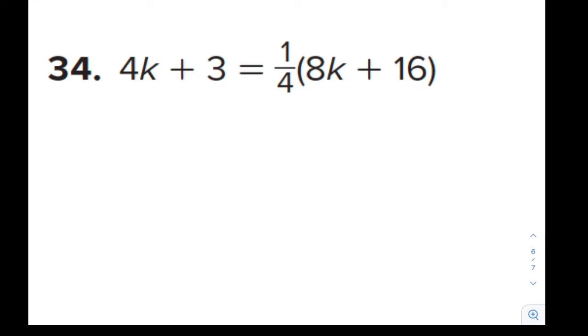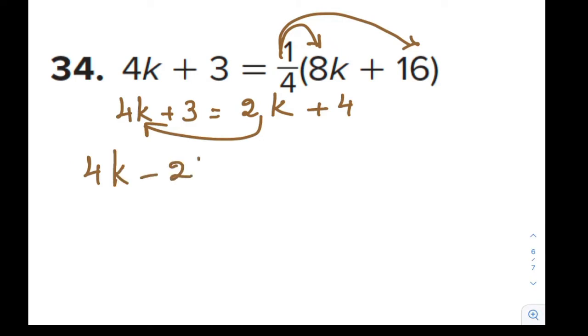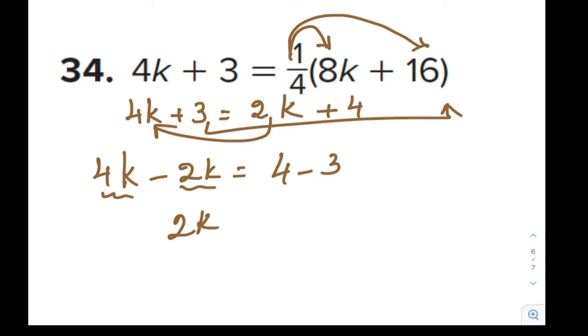Let's solve one with fractions. 4k plus 3 is equal to, let's distribute this, 1 over 4 times 8, 1 fourth of 8 is 2k, and 1 fourth times 16 is 4. Let's combine like terms. This would be 4k minus 2k. Taking the 3 to the other side, reversing the sign, so it's 4 minus 3. Now, 4k minus 2k is 2k. 4 minus 3 is 1. Divide both sides by 2. So, k is 1 over 2. And in this case, we have one solution.